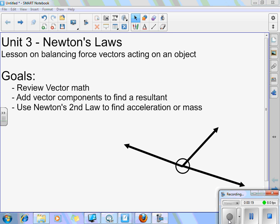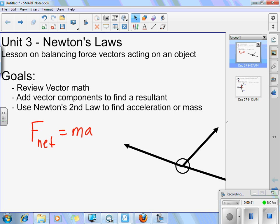Our point is to add the vector components to find a resultant, and then use Newton's second law to find the acceleration or mass. As you recall, Newton's second law says that the net force equals ma. That's what we'll end up using for finding the acceleration. Hopefully you'll recall the terms vector components.